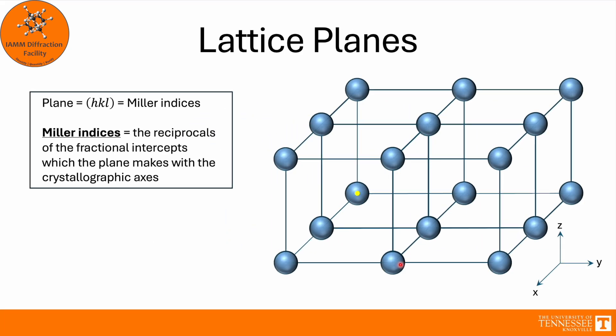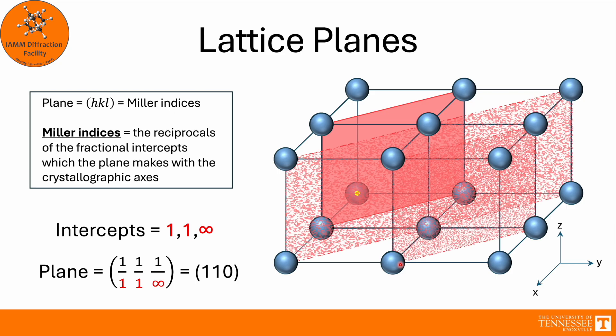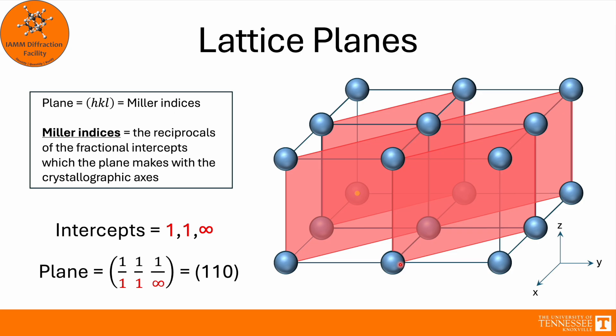So let's work at identifying some different types of planes. This one here, we see that it crosses the x-axis at 1, y-axis at 1, and the z-axis never, so infinity. We take our reciprocals and we get the (1,1,0) plane. And just to highlight it, we also have many other (1,1,0) planes in these four unit cells.